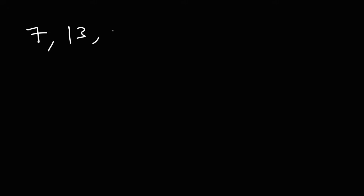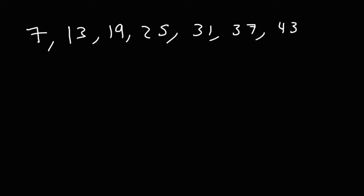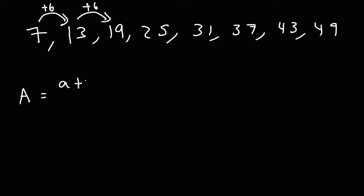Now let's compare this with the arithmetic mean. Let's say the first number is 7, and we're going to add 6 to each number: 7 plus 6 is 13, 13 plus 6 is 19, 19 plus 6 is 25, and so forth. This is known as an arithmetic sequence, because we're adding a common difference — in this case 6 — to get the next number. To get the arithmetic mean, it's basically the average of two numbers.